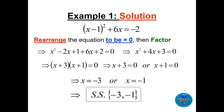The first idea is to rearrange the equation to equal zero, then factor. Expanding the perfect square gives x squared minus 2x plus 1, plus 6x, plus 2 equals zero. Combining like terms: x squared plus 4x plus 3 equals zero. Factoring gives x plus 3 times x plus 1. By the zero factor property, x plus 3 equals zero or x plus 1 equals zero, so the solutions are x equals minus 3 and x equals minus 1.